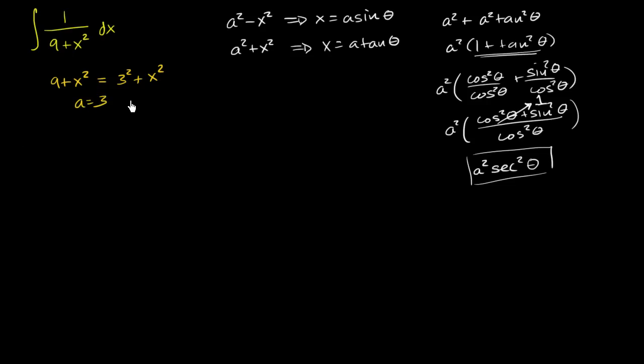So we'd want to make the substitution x equals 3 tangent of theta. And if we wanted to solve for theta, you can divide both sides by 3, because we're later going to have to undo the substitution. x over 3 is equal to tangent theta, or theta is equal to arctangent or inverse tangent of x over 3.